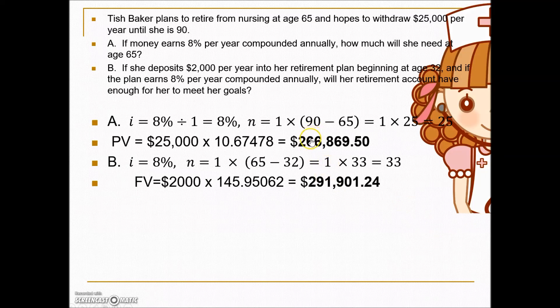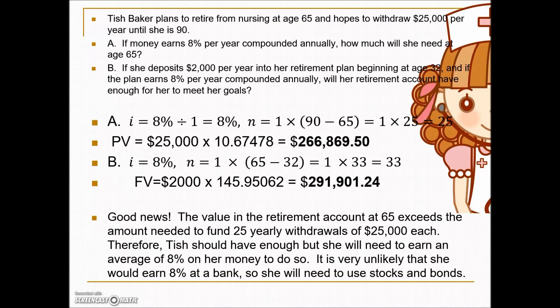She has certainly met her goal — she has more saved in her retirement account than the lump sum she needs at the start of retirement to ensure $25,000 per year for 25 years. One important note: this is based on the assumption that she's earning 8% per year on her savings. Banks aren't going to pay 8%, so she will need to invest in stocks, bonds, mutual funds, or some other investment paying a higher interest rate.